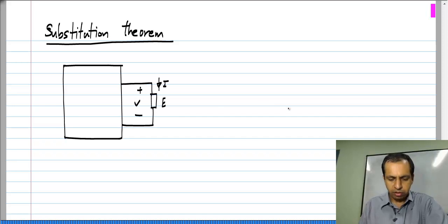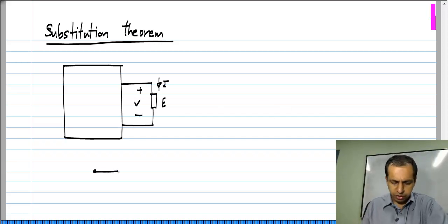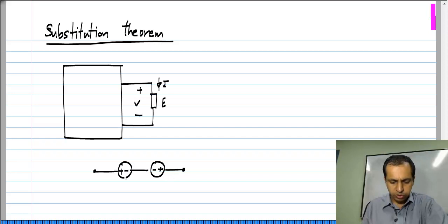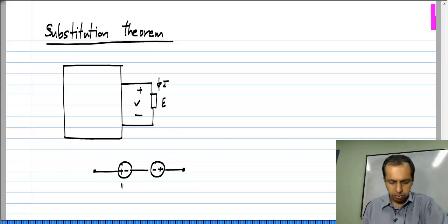Now, let me make the following construction. First of all, I will consider a series combination of two voltage sources connected oppositely. If you look at the polarities, this has the positive sign on the left side and this on the right side, and both have a value of V.